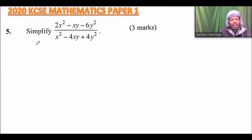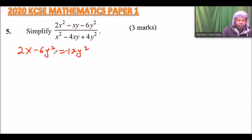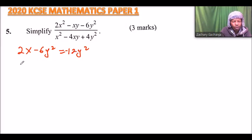Once we do that, we need to get two numbers such that when you add them you get minus y, which is the coefficient of x, and when you multiply them you get 2 times minus 6y squared, which gives you minus 12y squared. So we need two numbers that add to minus y and multiply to minus 12y squared. These two numbers will be minus 4y and 3y.